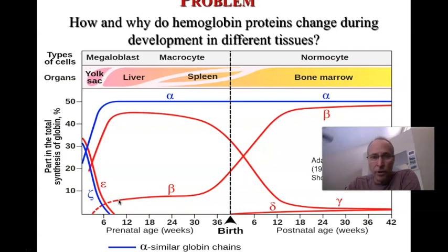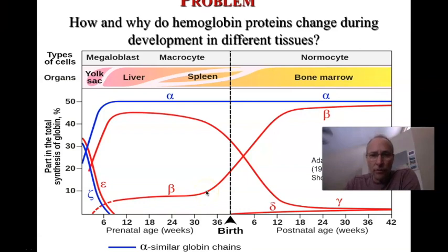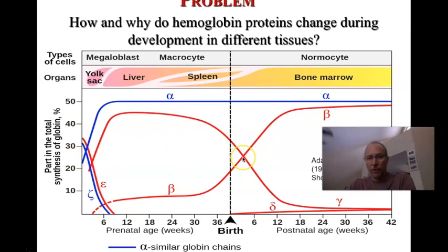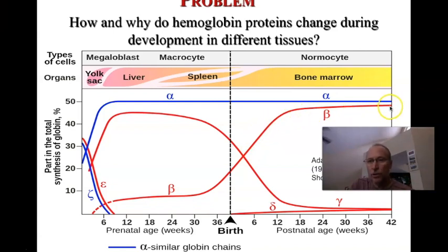Beta globin is the gene shown earlier. Throughout the early fetal developmental stage, you're about eight or nine percent beta globin. But as you approach the last nine weeks or so of development, fetal hemoglobin starts to go up, so that just about two or three weeks after birth, about half of the non-alpha chains are beta. By about 42 weeks after birth, you're in the adult condition where half is alpha and half is beta.